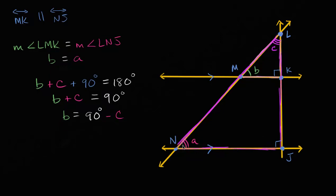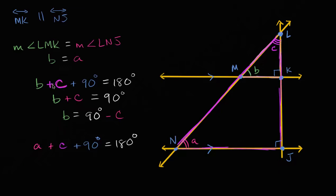So we can write something very similar: A plus C plus 90 degrees is going to be equal to 180 degrees. The C here is in that purple color.